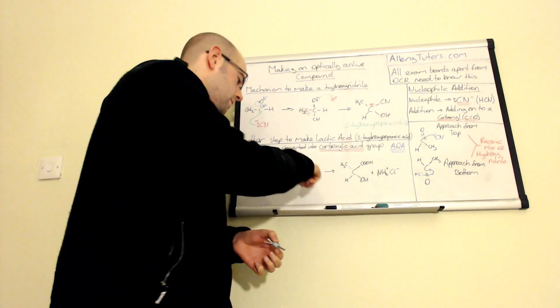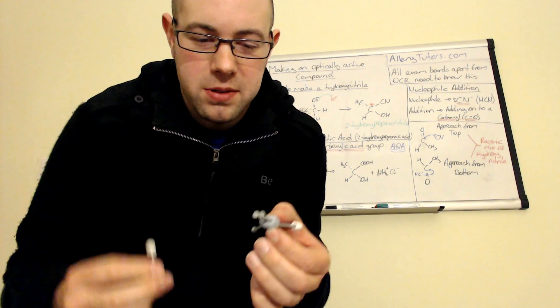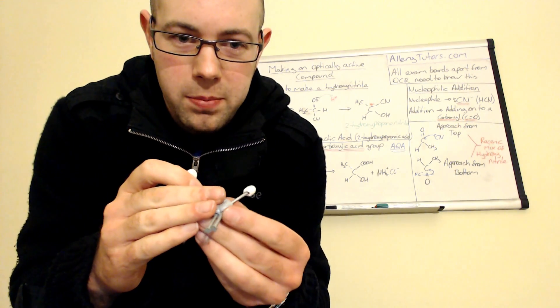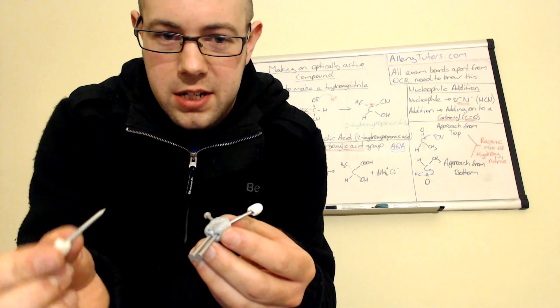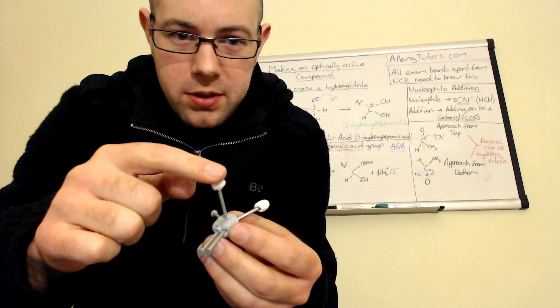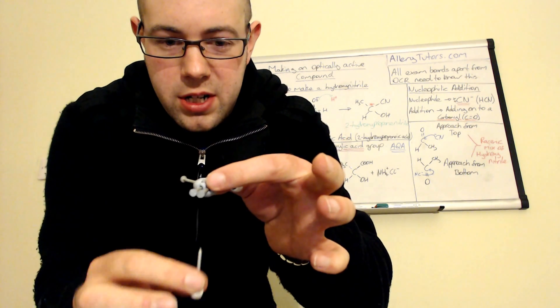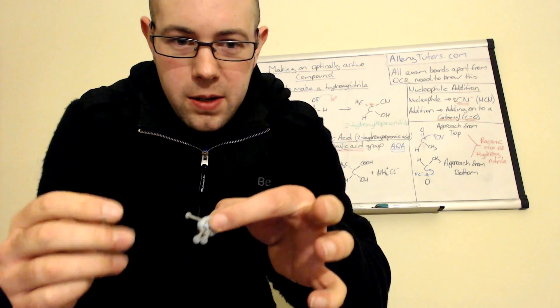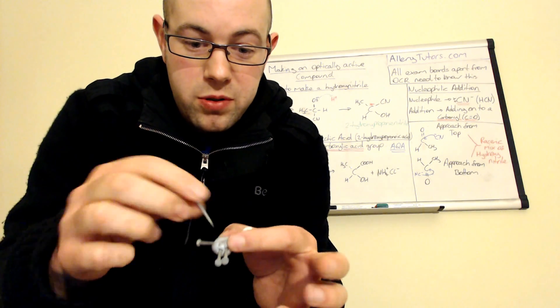Now this is quite important because when we have our cyanide, so imagine this is our CN minus. So if I hold it up just at a slight angle like that, then what happens is your cyanide can either approach from the top or it can actually approach from underneath like that. And it can approach with no preference really, whether it approach from the top or the bottom.